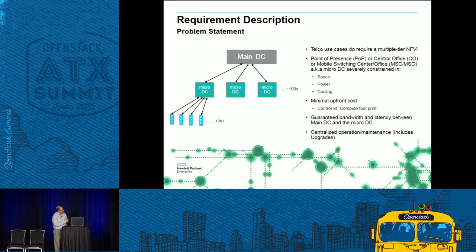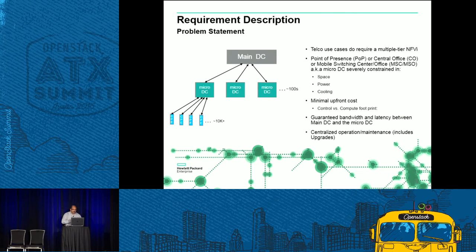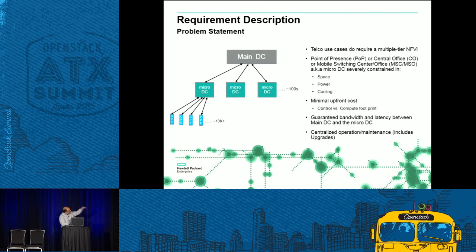Customer edge devices are typically driven from the point of presence — these could be customer/provider edge equipment in small form factor, and there could be thousands of those, or the micro DCs could be driving mobile base towers. Between the main data center and micro DC, you need to guarantee certain bandwidth and latency. Service providers and telco customers are generally okay with providing those guarantees. Another key challenge is how to provision, maintain, and manage the entire array of micro DCs — including upgrades, which we heard in other talks is a very serious issue in large deployments.